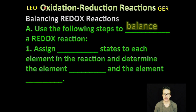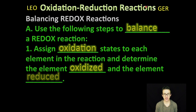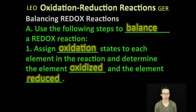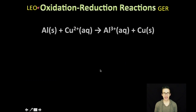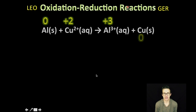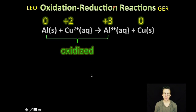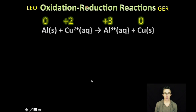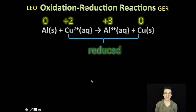So let's take a look at the steps that are required to balance a redox reaction. First thing you want to do is assign oxidation states to each element in the reaction and determine the element that's been oxidized and the element that's been reduced. As we come back to this redox reaction, first thing — assign oxidation states. Pretty easy to do for your elements. Remember zero; your ions will take the oxidation state of that ion. Our aluminum has been oxidized — it has lost electrons. Our copper has been reduced — it has gained electrons. So that's your first step: just identify what has been oxidized and what has been reduced.